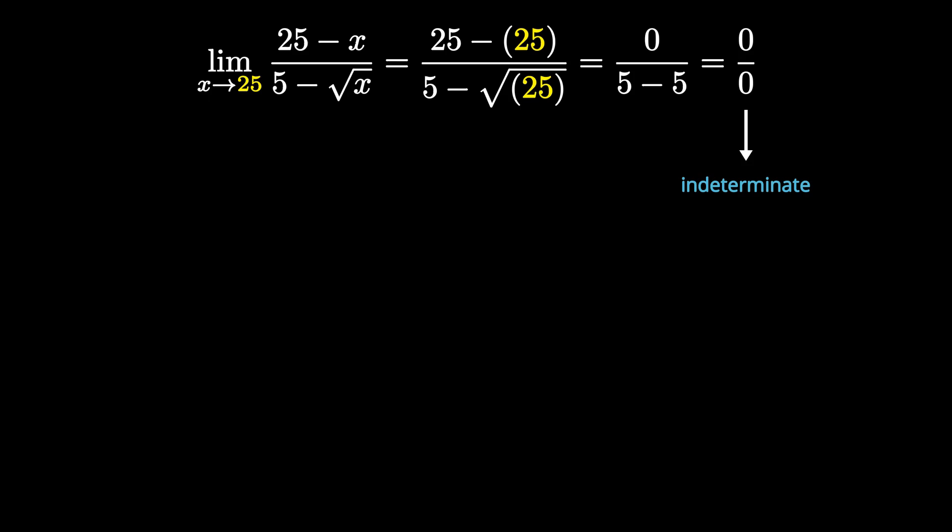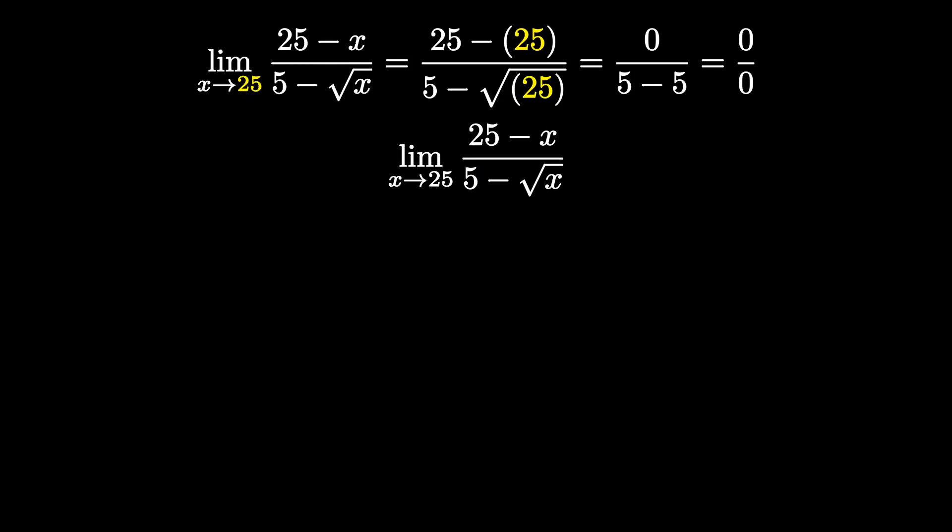What we have to do is cancel out those holes and then reevaluate our limit to uncover the true value. To identify those holes, we need to use some algebraic techniques. Today, we are going to rationalize the denominator. We have the limit as x approaches 25 of 25 minus x all over 5 minus the square root of x.